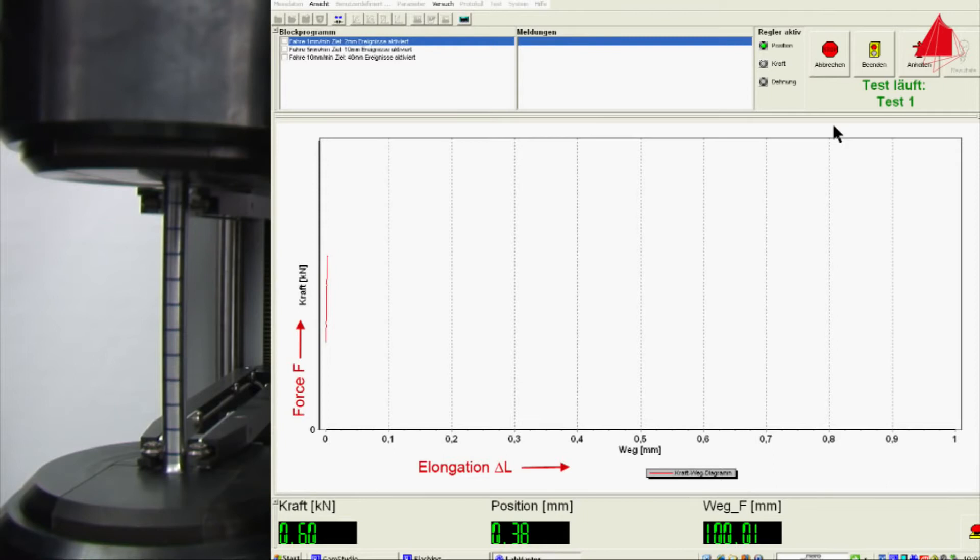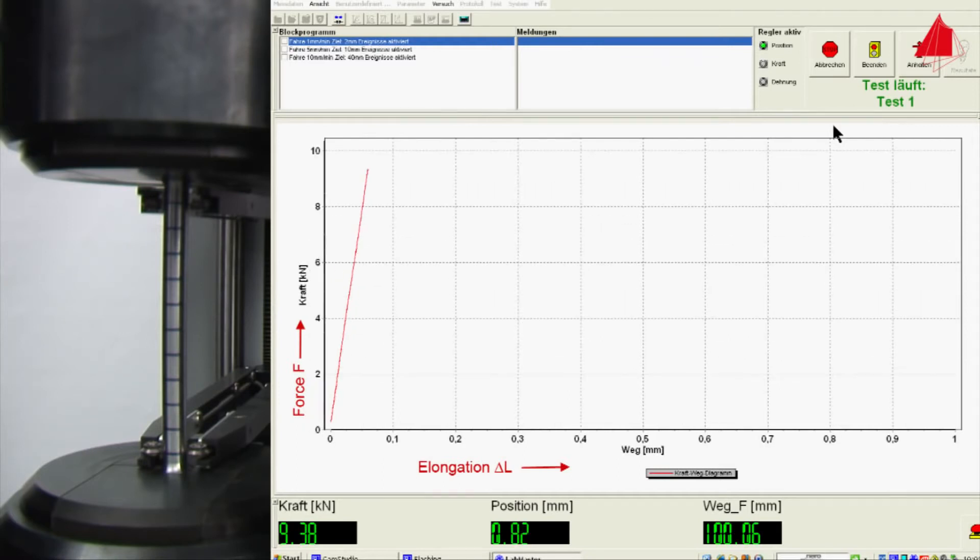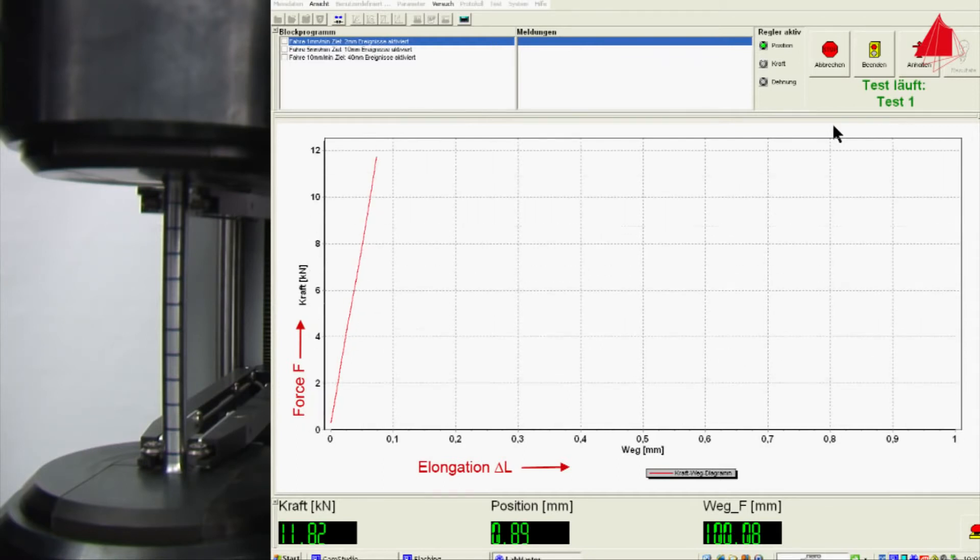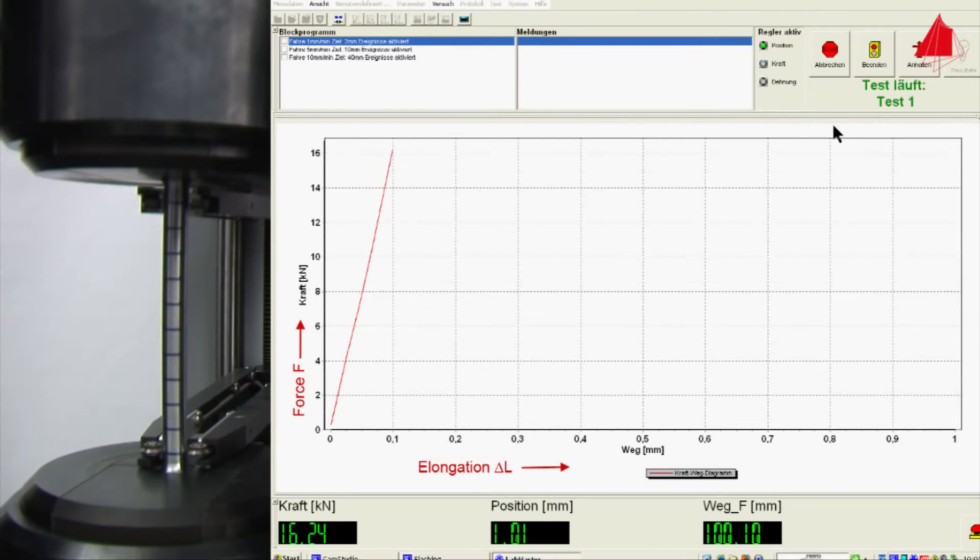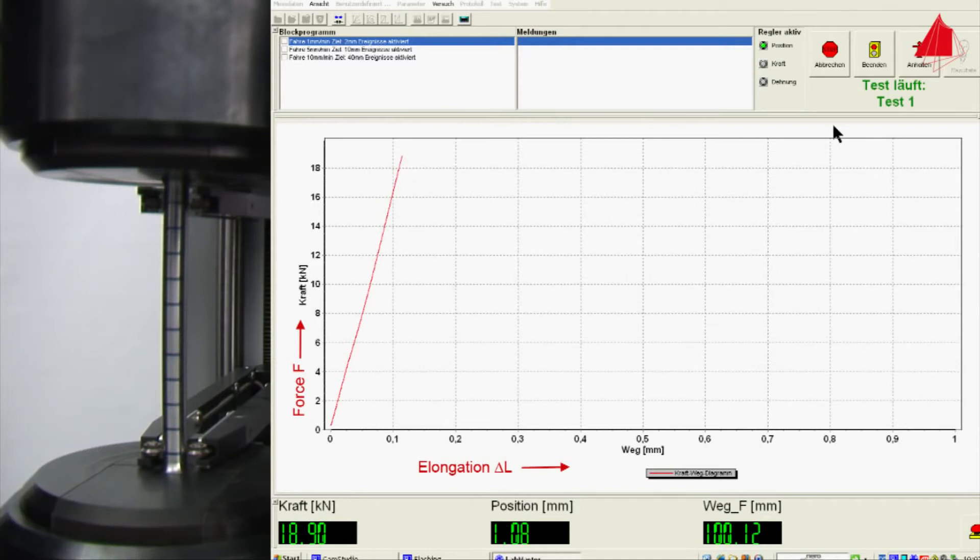At first, the force rises rapidly. Force and elongation are proportionate and form a steep straight line in the diagram. In this area, the material behaves elastically. If the test piece were to be unloaded from this area, it would spring back completely to its original length.